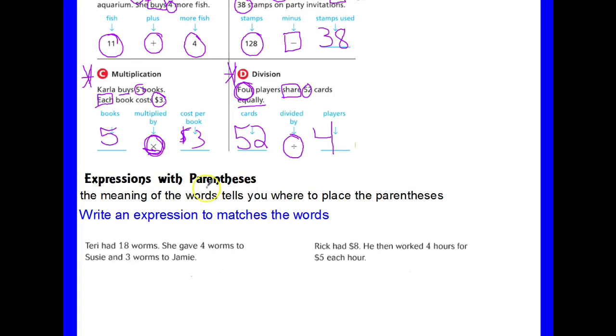Let's take a look at expressions with parentheses. The meaning of the words will tell us where we should place the parentheses. So we are going to write an expression that matches these words. Terry had 18 worms. The number she started with, 18. She gave 4 worms. So we are going to give something, we have to subtract. She gave 4 worms to Susie and 3 worms to Jamie.